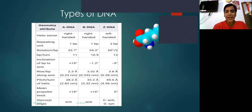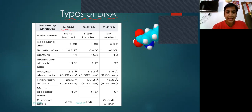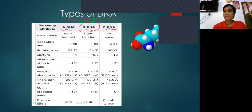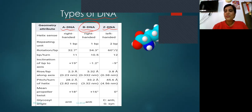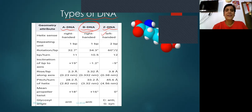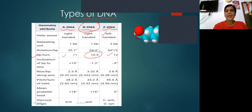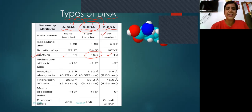DNA is of A, B, and Z type, but the form present in our body is B-DNA. Among these three types, Z-DNA is left-handed, whereas the rest are right-handed. The difference is also in the base pairs per turn: B-DNA has 10.5 base pairs per turn, A-DNA has 11, and Z-DNA has 12. If we treat DNA with different chemicals, it can be converted into a zigzag conformation or Z-DNA, but the most stable conformation is B-DNA.